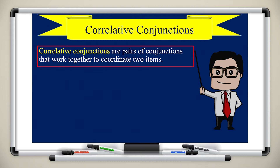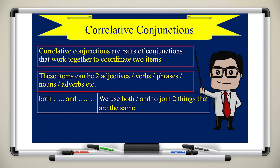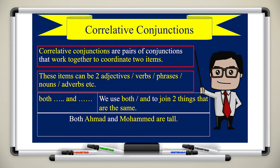Now, correlative conjunctions. These are pairs of conjunctions that work together to coordinate two items. These items can be two adjectives, verbs, phrases, nouns, adverbs, etc. We use 'both...and' to join two things that are the same. For example: 'Both Ahmed and Ali are tall.' Another example: 'She is both pretty and intelligent.'